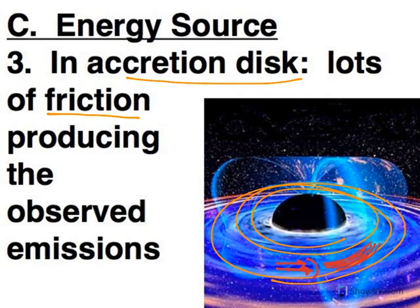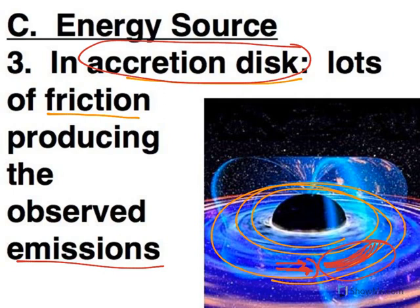So a lot of what we see — the infrared material, the x-ray radiation — all of that emission coming off of quasars and active galaxies is mostly within the accretion disk. That's the part that's generating the bulk of what we observe.